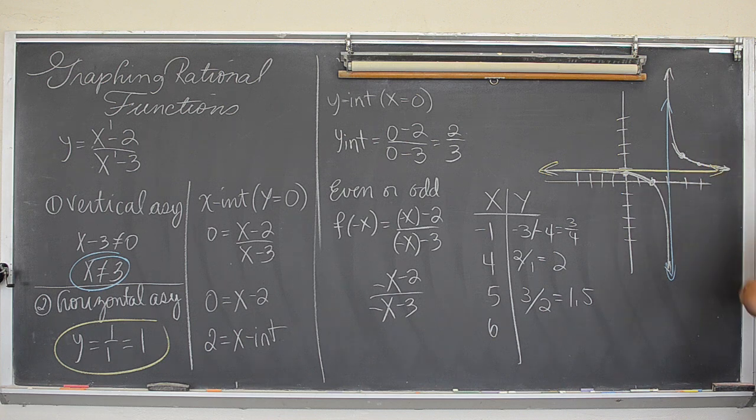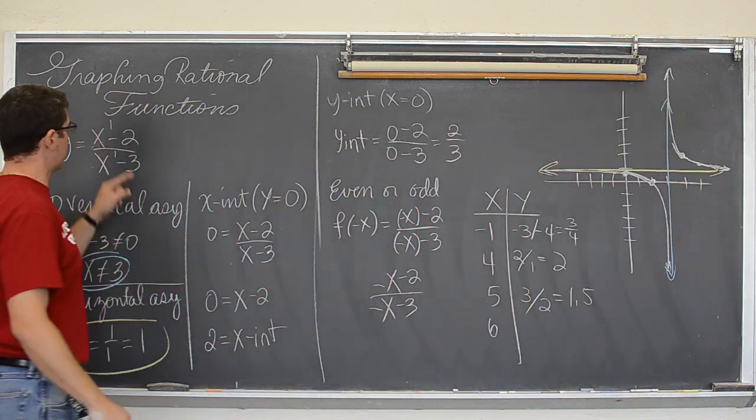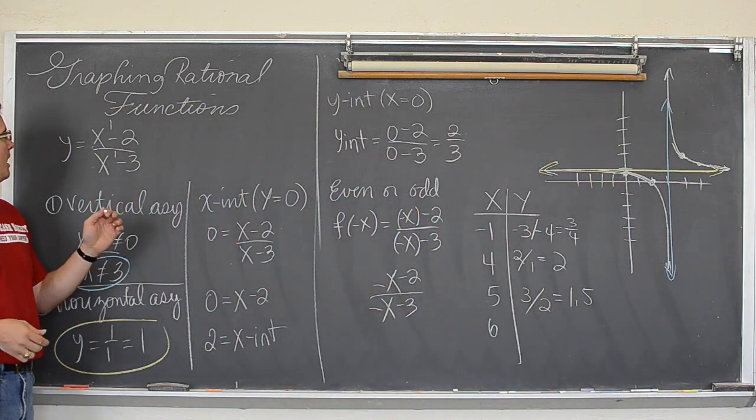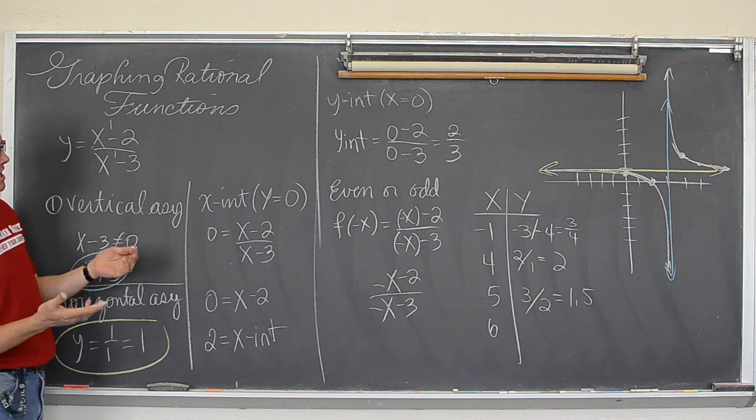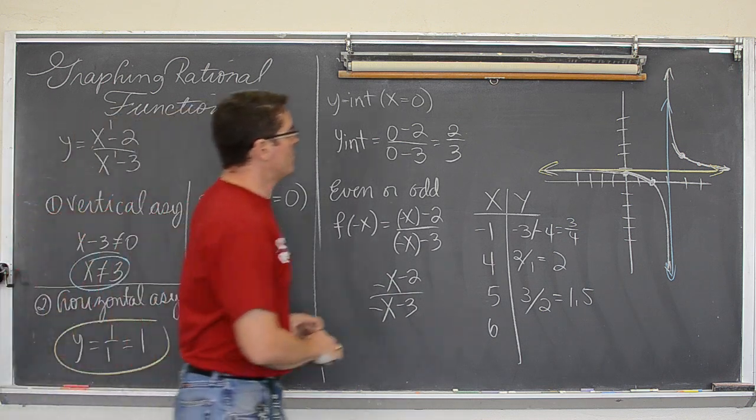So there you go. The white part of this graph is the graph of y equals x minus 2 over x minus 3. So, graphing rational functions. Let's try and do one more.